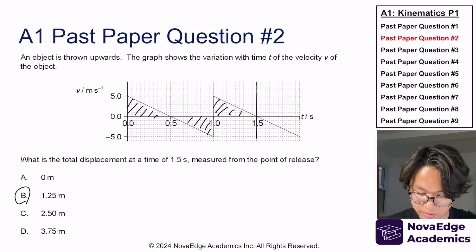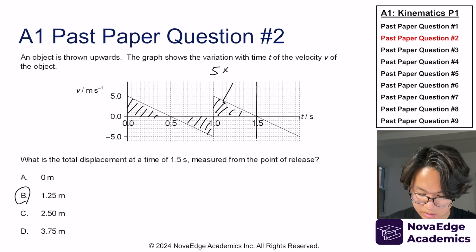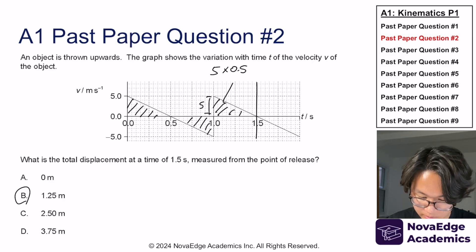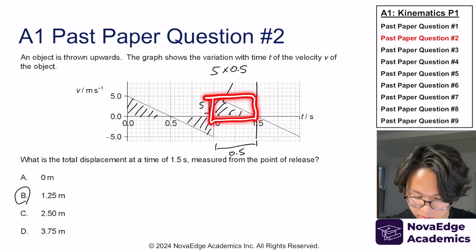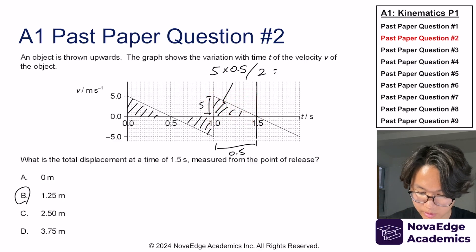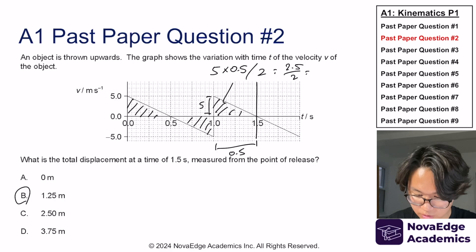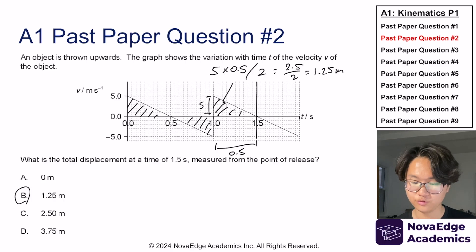So what remains is the area here. The area is represented by 5 times 0.5 — this is 5, this is 0.5 — but that would be the rectangular area. We want half of that, so dividing it by 2, we get 2.5 divided by 2, which is 1.25 meters.